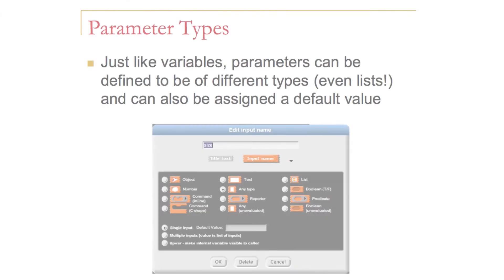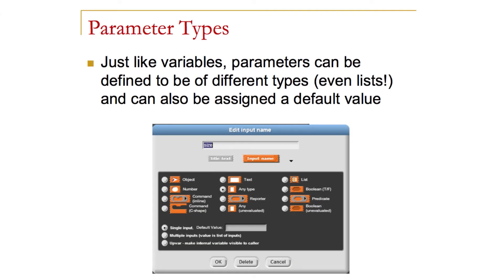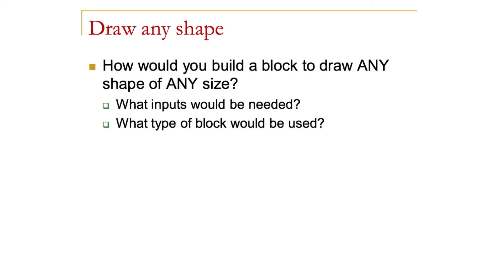When creating parameters with blocks in Snap, we can also define the type of the parameters, much like how we define the type of variables. By clicking the right arrow on the parameter name, we have the option of defining what type we'd like the parameters to be — numeric types, text types, or even lists. We can generalize even further from drawing a fixed-size square to drawing any shape, specifying any number of sides and any pixel size, using 'sides' and 'size' as our two parameters.